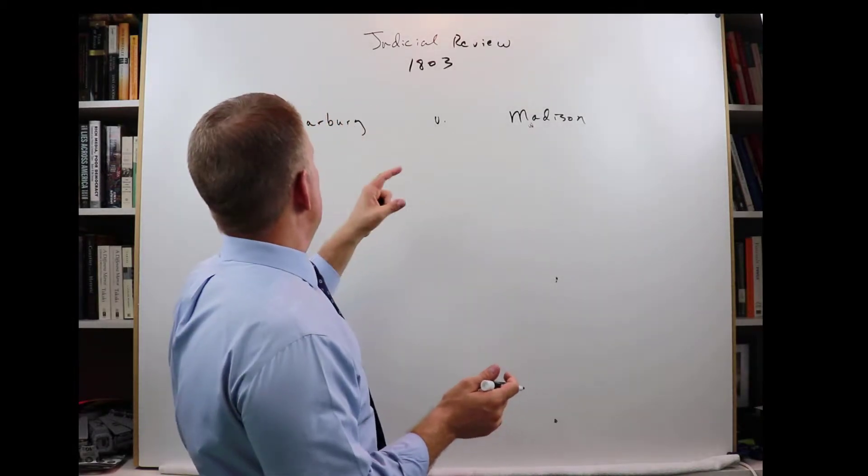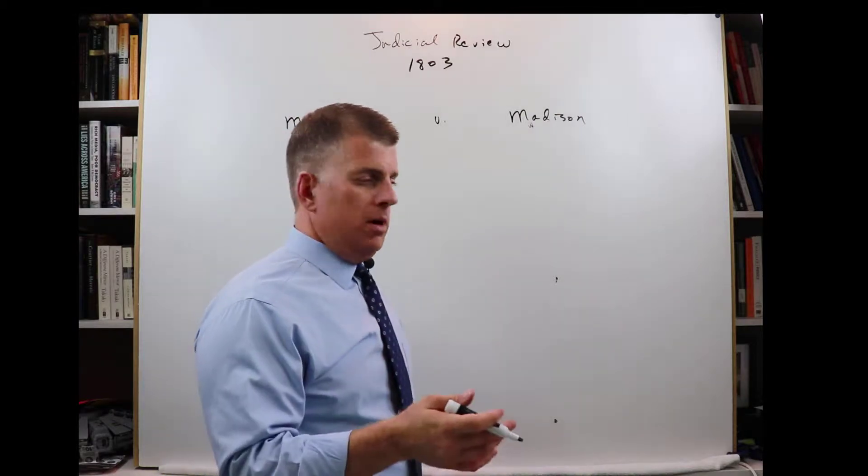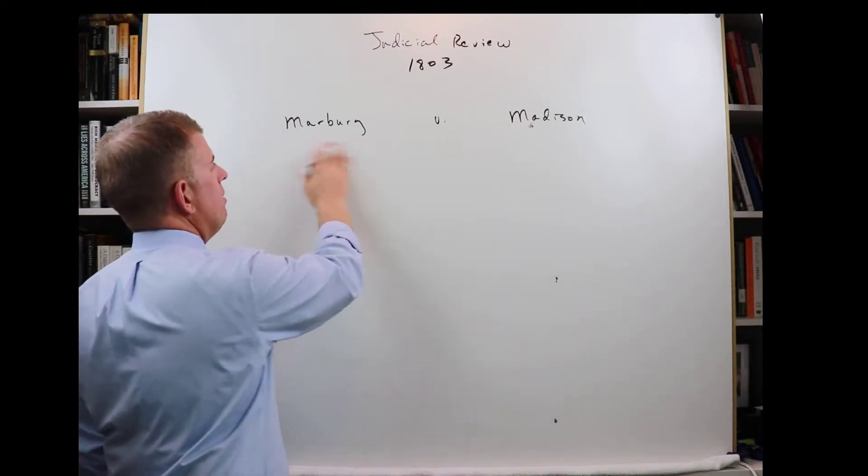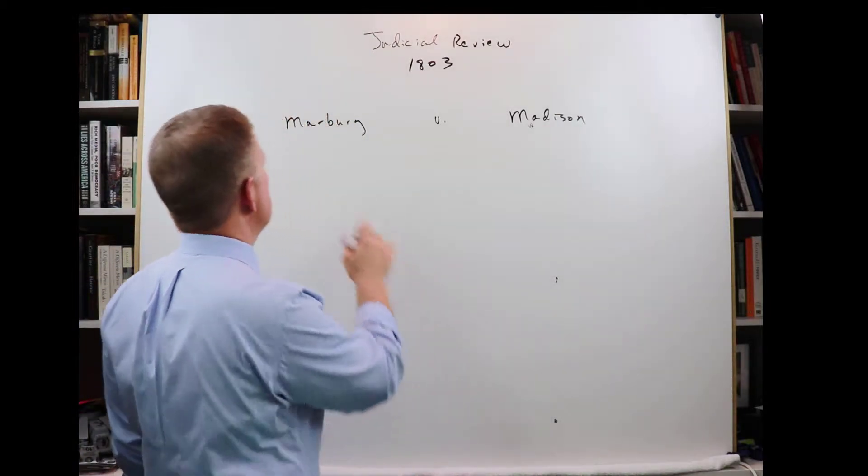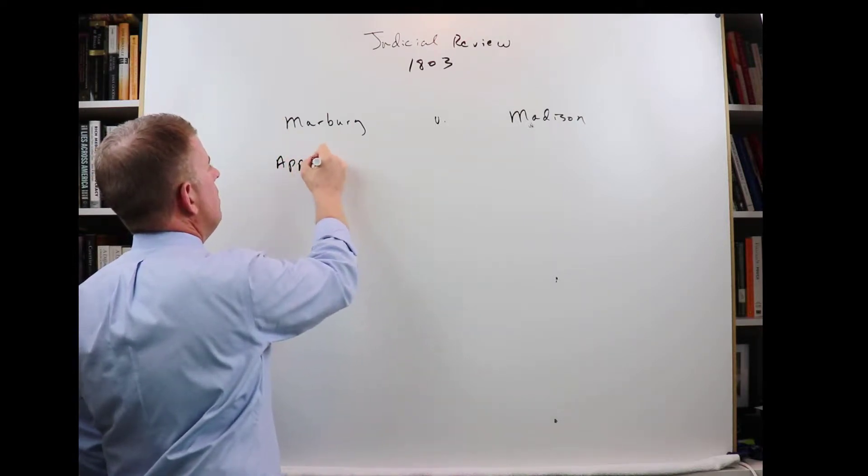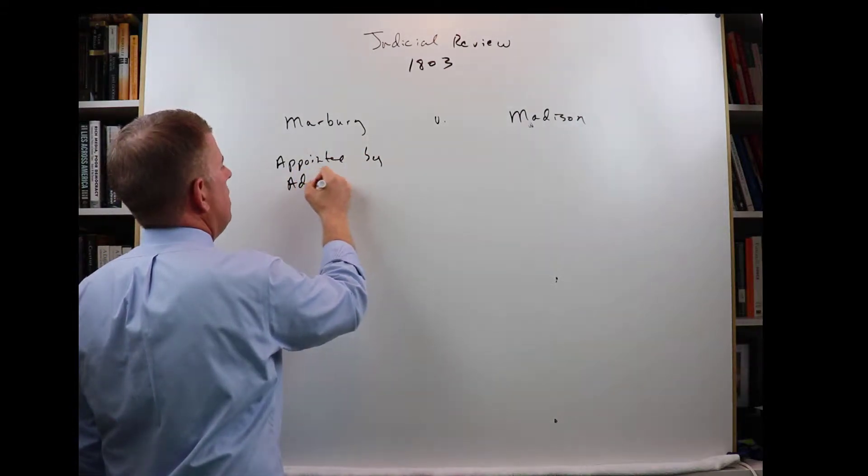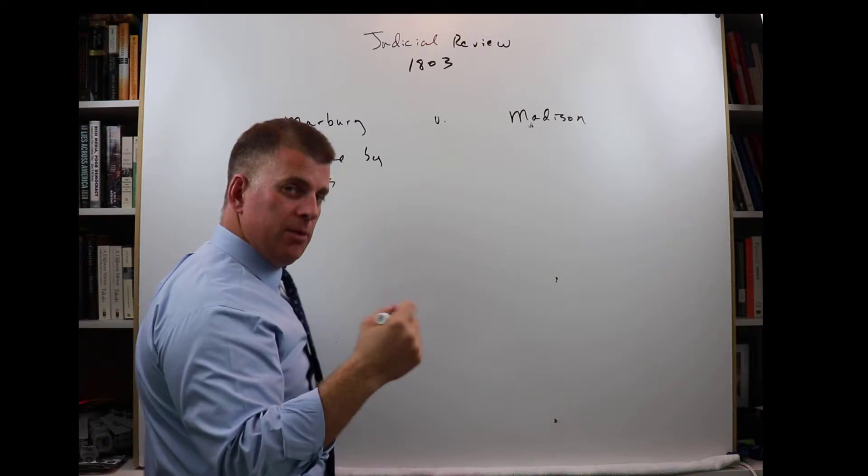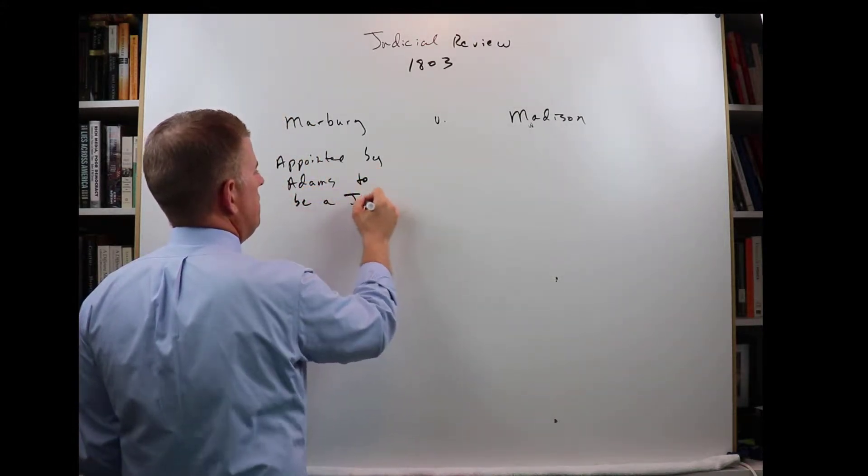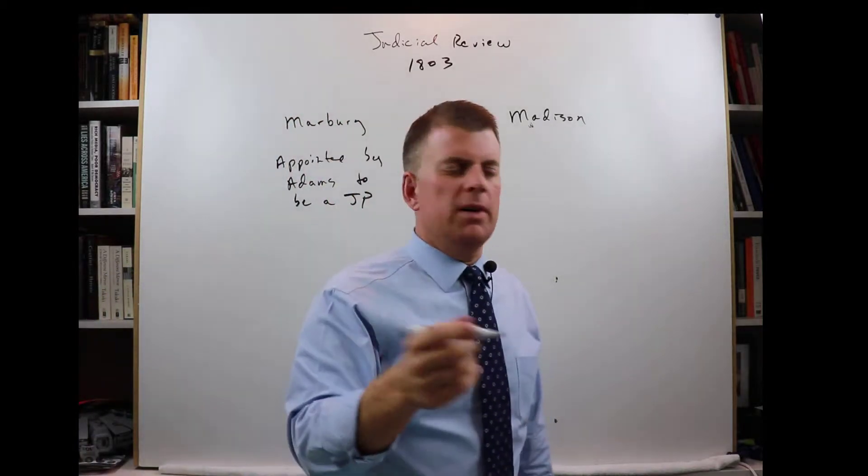So back in 1803 or right around then, this man named William Marbury was appointed, or at least was going to be appointed, to be a justice of the peace. William Marbury was appointed by John Adams, the second president, to be a JP, a justice of the peace. That's kind of like a judge, a county judge or something like that.